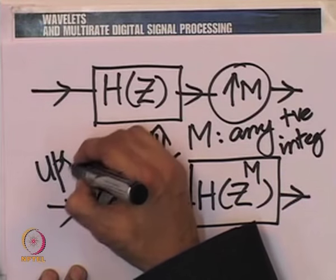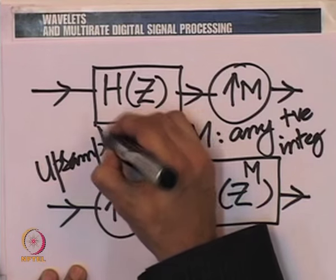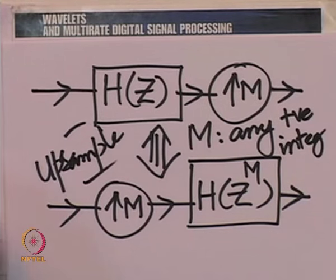With that background on the noble identities, let us apply them now to the context of the Haar multiresolution analysis. Our objective was to go towards the wave packet transform in the context of the Haar MRA. The wave packet transform makes sense when you go down at least two steps in the ladder of the multiresolution analysis, so let us go down two steps.